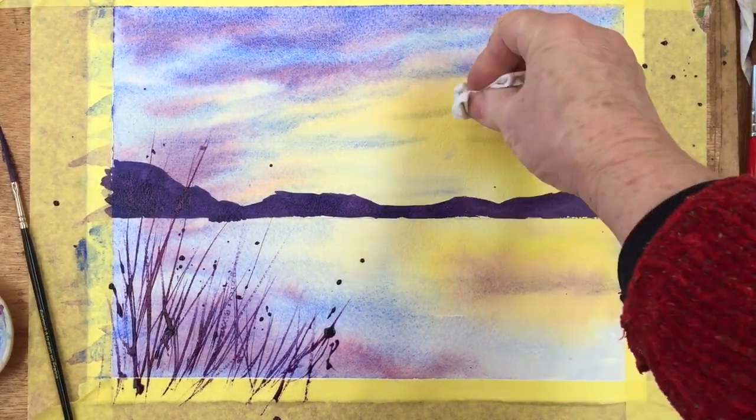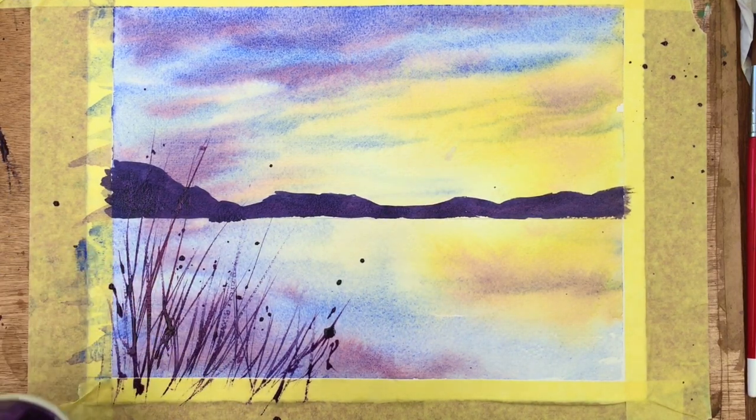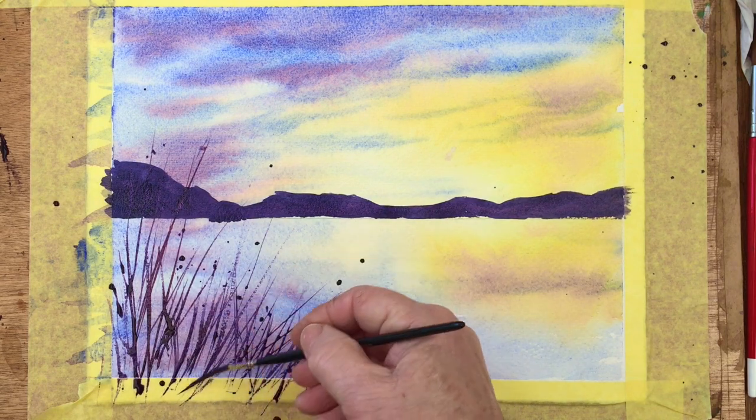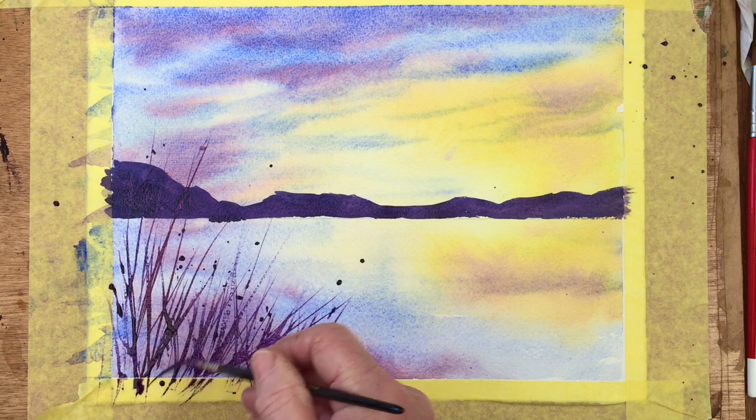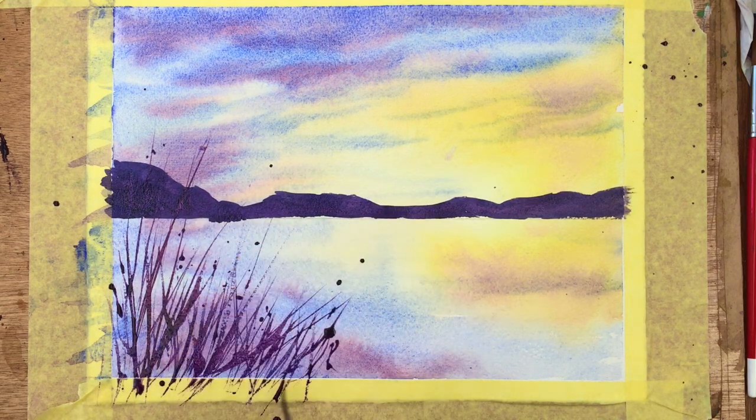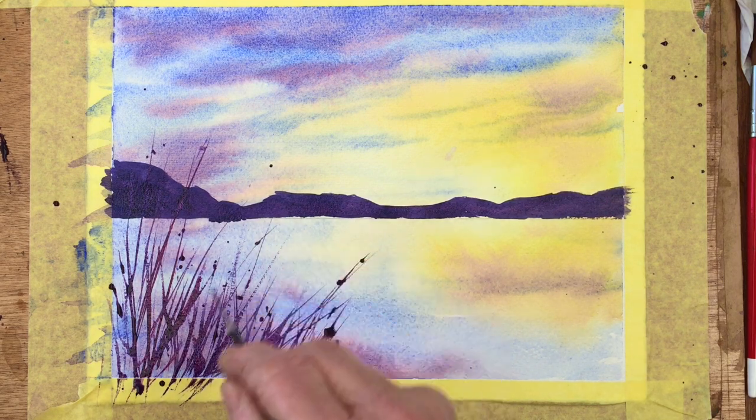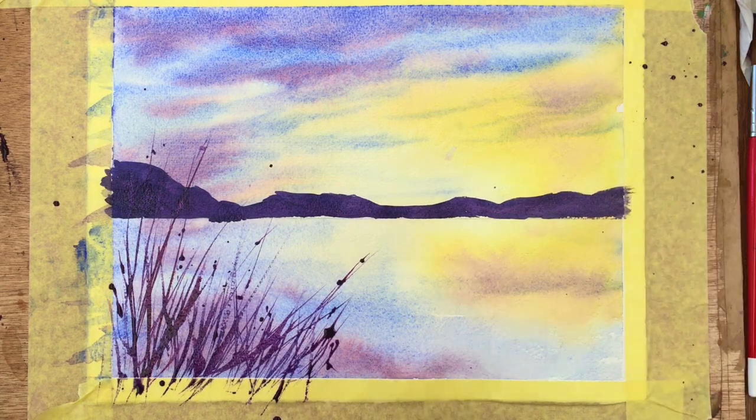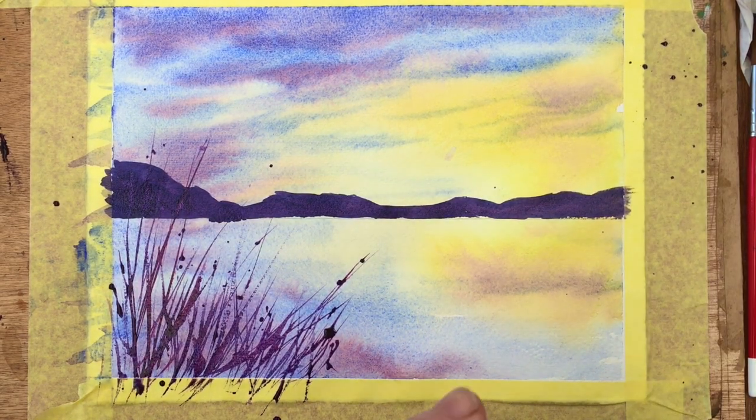If you want to be more careful than me you could put a piece of tissue paper over your sky to protect it while you're doing the flicky bits, so that wouldn't be a bad idea. I'm just putting in a few slightly thicker grasses there. This is so easy, this painting. Anyone, really seriously even children, would be able to do a pretty good job of this. I used to teach something similar to this when I was a school teacher and the kids were always very pleased with it when it turned out.